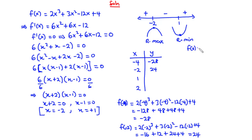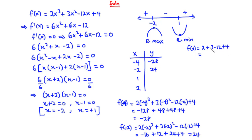For f(1): 2 times 1³ = 2. 3 times 1² = 3. -12 times 1 is -12, plus 4. So 2 plus 3 is 5, plus 4 is 9, minus 12 is -3. So f(1) = -3.